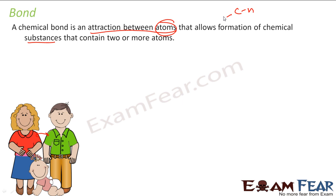So in the family, there's an attraction between husband and wife — there's a bond. Similarly, there's an attraction between atoms and that allows for the formation of a chemical substance which has more than one atom. For example, methane is the simplest hydrocarbon — there's a bond between this carbon and these hydrogens.